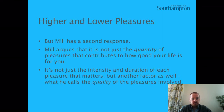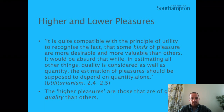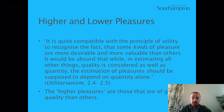But Mill has a second response. He argues that it's not just the quantity of pleasures that contributes to how well your life goes. It's not just the intensity and duration of each pleasure that matters, but another factor as well — what Mill calls the quality of the pleasures involved. Mill says: it's quite compatible with the principle of utility to recognise the fact that some kinds of pleasure are more desirable and more valuable than others. While in estimating all other things quality is considered as well as quantity, the estimation of pleasures should not be supposed to depend on quantity alone. The higher pleasures are those that are of greater quality than others.